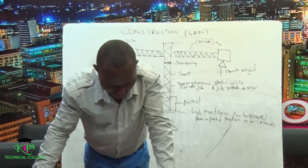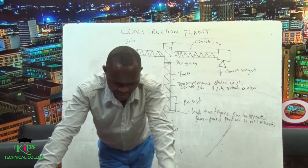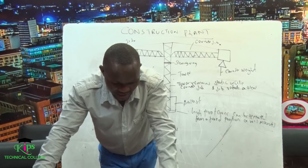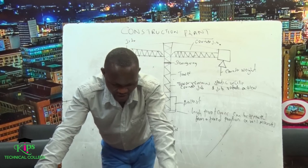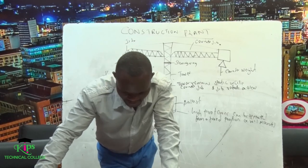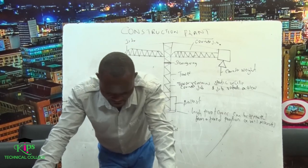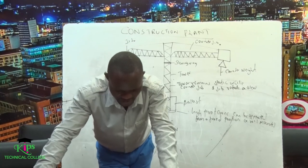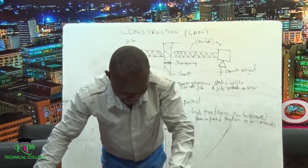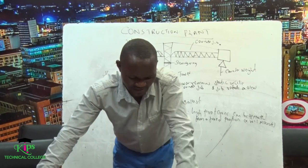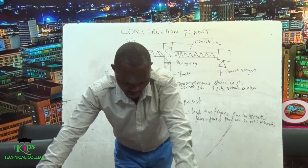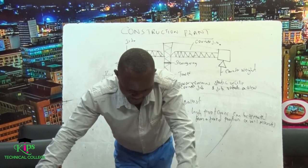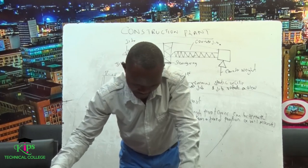Another type of crane is the mast crane. In this type of crane, we have the winch, which encloses the electric motor. Then we have the slewing platform chassis, the slewing ring, and the mast structure.